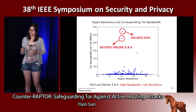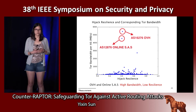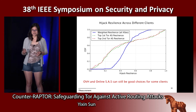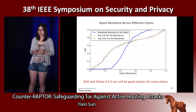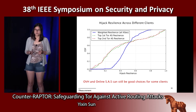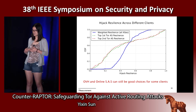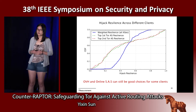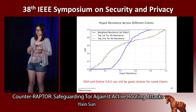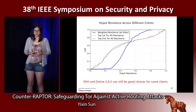The next question is: can OVH and online SAS still be good choices for some clients despite their overall low resilience? The answer is yes. A graph showing hijack resilience across different clients reveals high heterogeneity. For some clients the resiliences are really low with OVH and online SAS, but more than 20% of clients actually have very high hijack resiliencies with those providers.